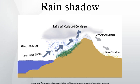A rain shadow is a dry area on the lee side of a mountainous area. The mountains block the passage of rain-producing weather systems and cast a shadow of dryness behind them. As shown by the diagram, the incoming warm and moist air is drawn by the prevailing winds towards the top of the mountains, where it condenses and precipitates before it crosses the top. The air, without much moisture left, advances behind the mountains creating a drier side called the rain shadow.